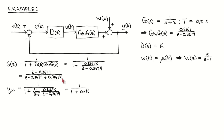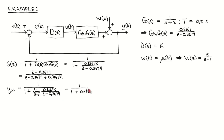For large values of the gain K, increasing the gain will decrease the gain of the transfer function as expected. If the disturbance is given by a unit step, then we can calculate the steady-state output due to the disturbance using the previous result, which turns out to be 1 divided by 1 plus 0.5 times K. We see again that increasing the controller gain decreases the effect of the disturbance on the output.